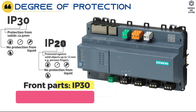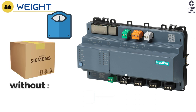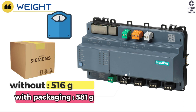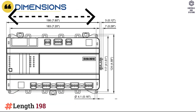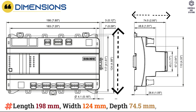Degree of Protection of Housing: Front Parts and In-Cutout is IP30, Terminal Part is IP20. Weight without packing is 516 grams, with packaging is 581 grams. Dimensions: Length 198mm, Width 124mm, Depth 74.5mm.